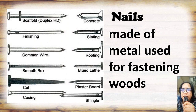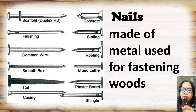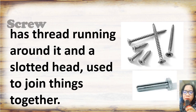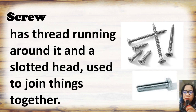Nails: made of metal, used for fastening woods. Screw: has a thread running around it and a slotted head, used to join things together.